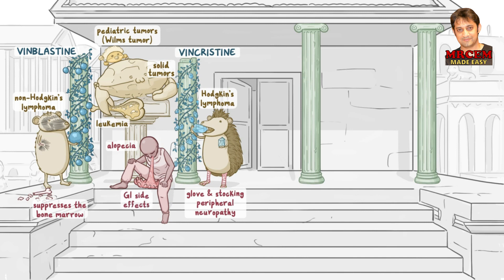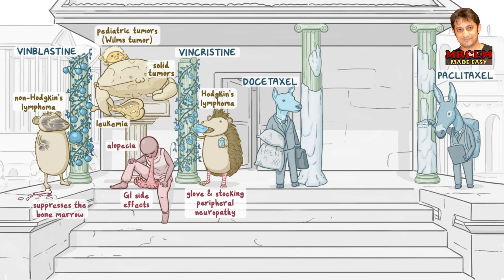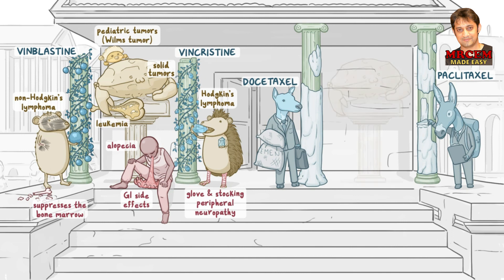Moving on to the taxanes, represented by two tax collectors by the third and fourth pillar. One of them is a doe for docetaxel, and the other is a pac-mule for paclitaxel. They spent the money they collected on cement to make the pillars ultra-durable. For indications, there's another statue of a stone crab between them since they're also used for solid tumors. This crab is holding a pair of bras in one claw for breast cancer, and an egg in the other claw for ovarian cancer, which are the two most common uses.